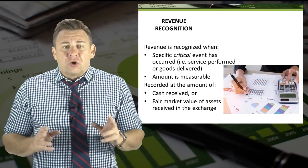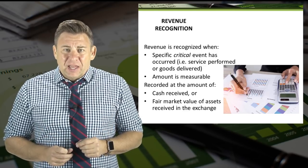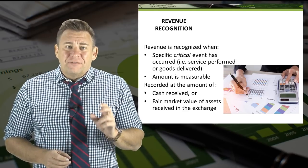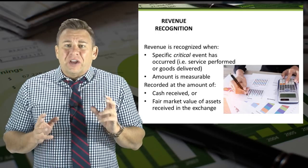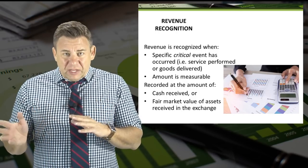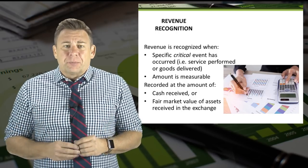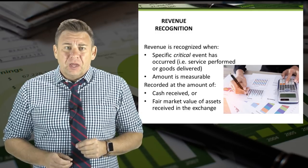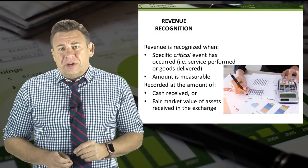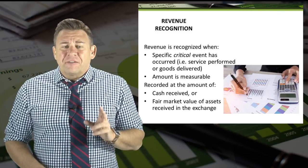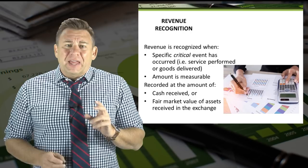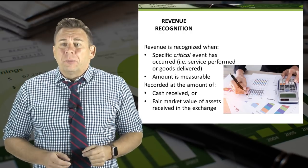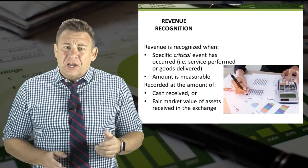For an accounting principles class, the specific critical event that occurs is either services are performed or goods are delivered. The amount of the journal entry is the fair value of the asset received — usually that will be cash, but not always.